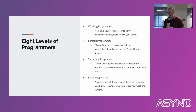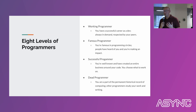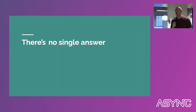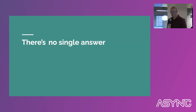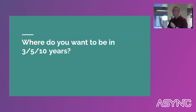Finally, the dead programmer — you're part of a permanent historical record of computing, other programmers study your work and writing, you've got a Wikipedia page, people write books about you. Which one are you? There isn't a single answer to what level is — it's down to you as individuals to decide what level you want to be. The real question to ask is: where do you want to be in three, five, or ten years' time? That's when it's time to have some kind of career plan.